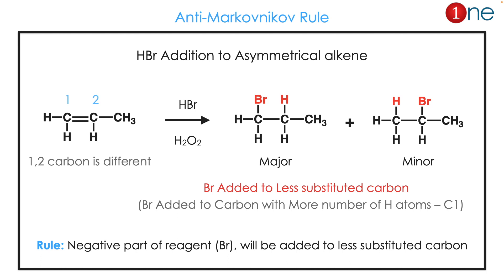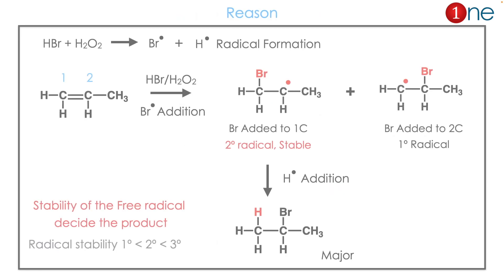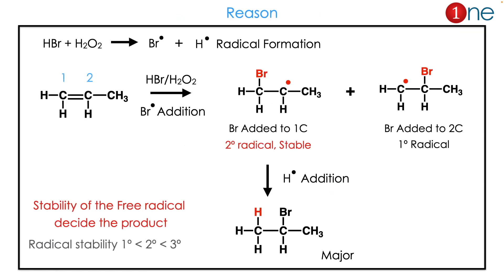The anti-Markovnikov rule states that the negative part will be added to the less substituted carbon. What is the reason behind that? Radical formation is the reason. Initially, bromine adds to the alkene and you have two different radicals formed.